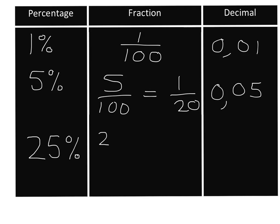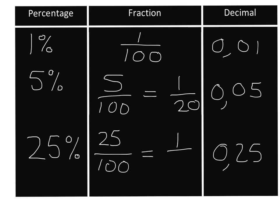Okay, so you should have said 25 percent means 25 over a hundred. Turning that into a decimal is very easy — it's 0,25. Twenty-five over a hundred isn't in simplest form, so we can simplify it by dividing top and bottom by 25: the top gives us one, the bottom gives us four. So 25 percent equals 25 over 100, which simplifies to a quarter, and it's the same as 0,25. Very easy to move between percentage, fraction, and decimal.